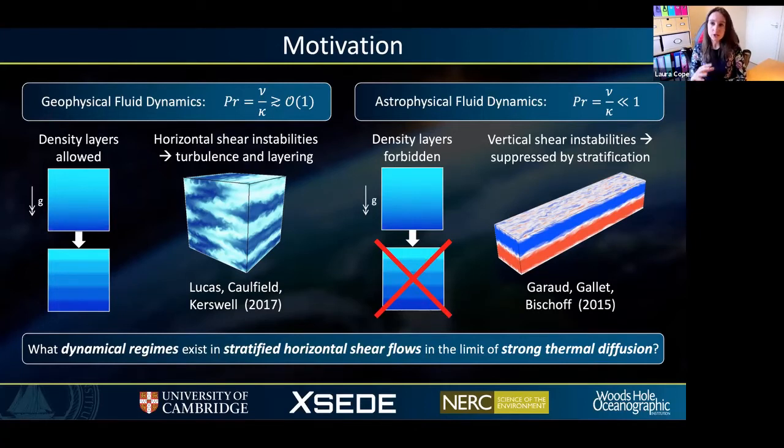The reduced stratification between the layers enables the onset of instabilities and hence the development of turbulence. For horizontal shear flows, this can give rise to spectacular layering patterns such as those that you can see in this figure here from this paper by Lucas et al in 2017.